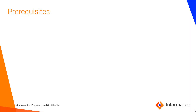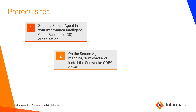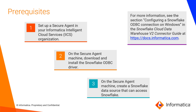Before you begin, complete the following tasks. Set up a secure agent in your Informatica Intelligent Cloud Services organization. On the machine that runs a secure agent, download and install the Snowflake ODBC driver and configure a Snowflake data source that can access Snowflake. For more information, see the Snowflake Cloud Data Warehouse v2 connector guide on the Informatica documentation portal.